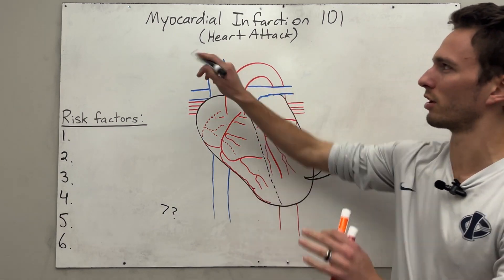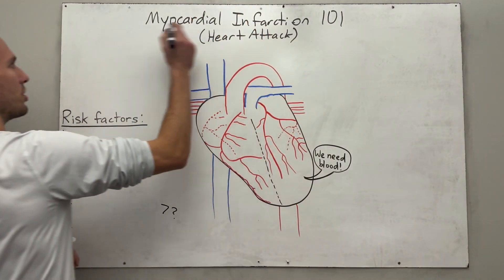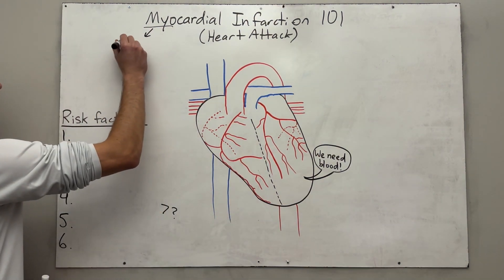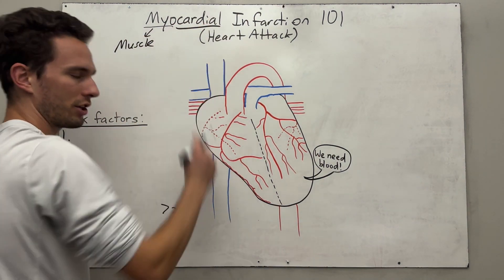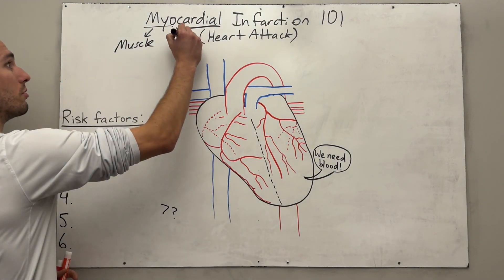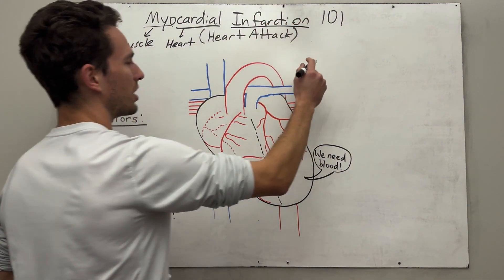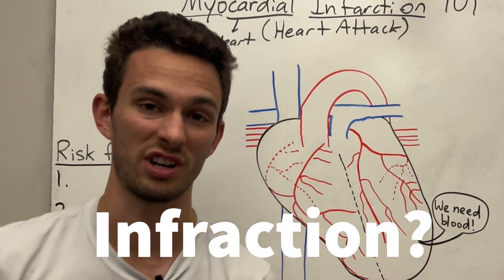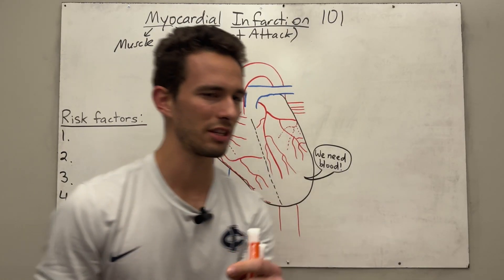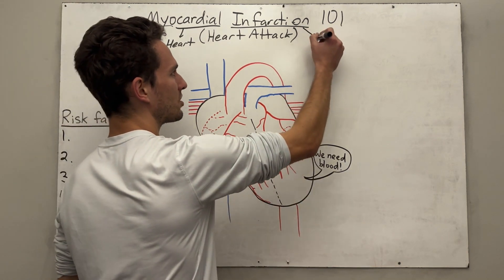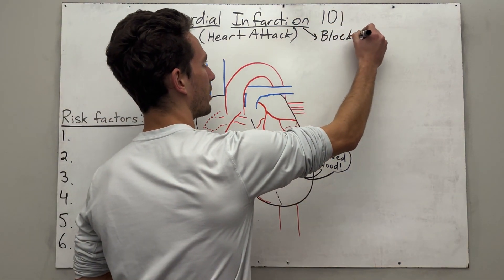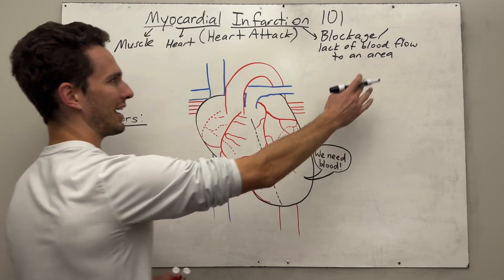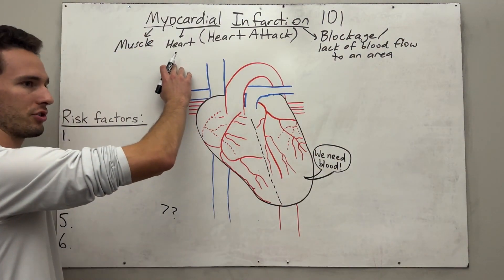Before we get started, let's break down the word myocardial infarction. Myo — anytime you see this in anatomy and physiology, you know that it means muscle. And cardial or cardio always refers to the heart. Then infarction — that kind of sounds like the word infraction. So if you have an infraction in sports, you're kind of getting in the way, and this definition is similar: it means a blockage or a lack of blood flow to an area. So if we put all this together, we see a lack of blood flow to the heart muscle itself.